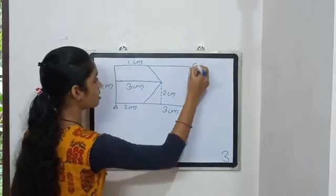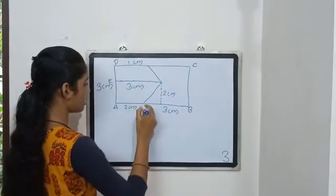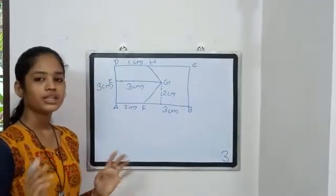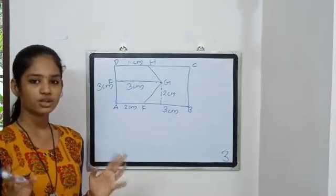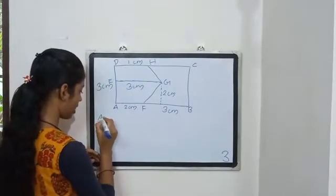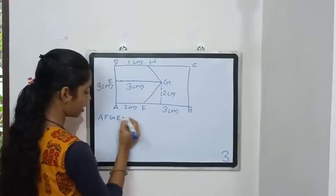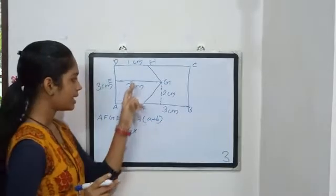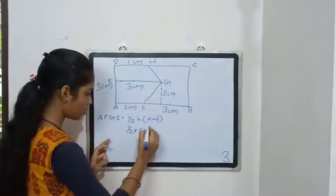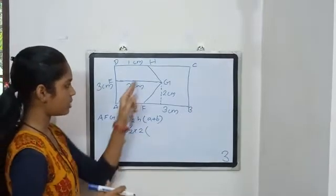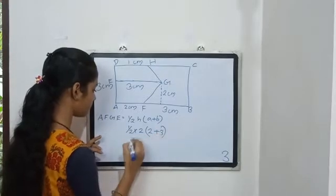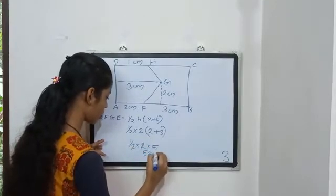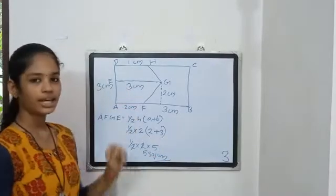Label points A, B, C, D, E, F, G, H. For trapezoid AFGE, the area equals half × H × (A + B). The height of this trapezoid is 2 centimeters. The two parallel sides are 2cm and 3cm, so 2 + 3 = 5. Area = half × 2 × 5 = 5 square centimeters. So trapezoid AFGE is 5 square centimeters.